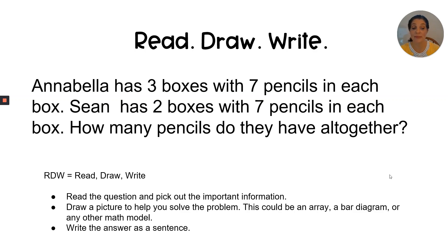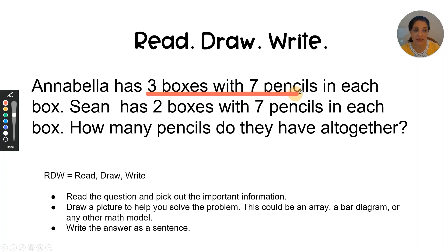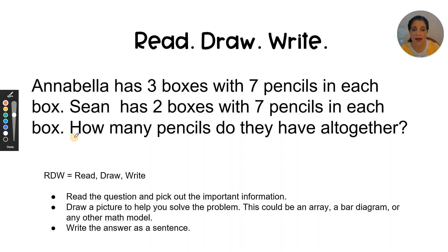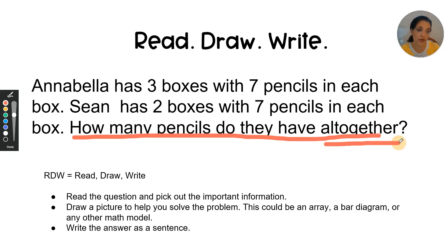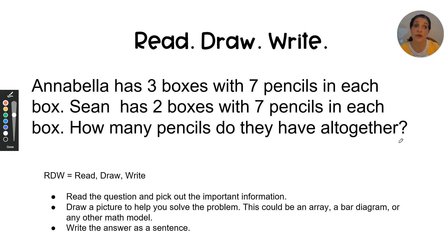We're going to read the question and pick out the important information, draw out some sort of math model, and then write a complete sentence to answer. Annabella has three boxes with seven pencils in each box — that's three groups of seven. Sean has two boxes with seven pencils in each box — that's two more groups of seven. How many pencils do they have all together? The word 'all together' is the important word. When I see 'all together,' that means I have to add some numbers together. So I'm going to use an array because that's what we've been using today.